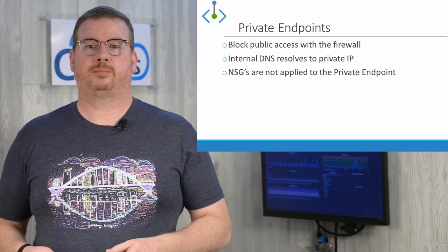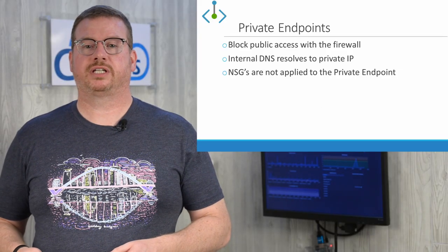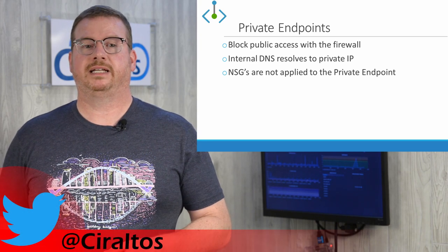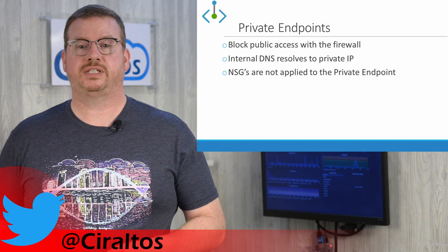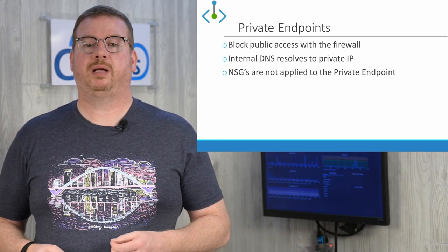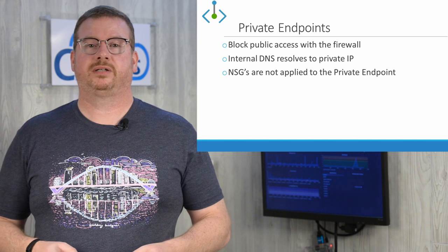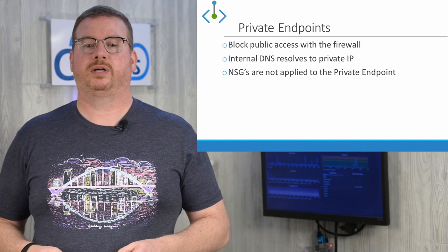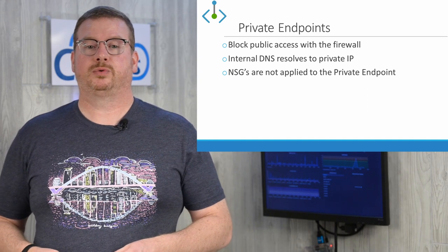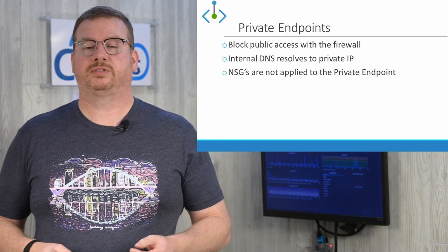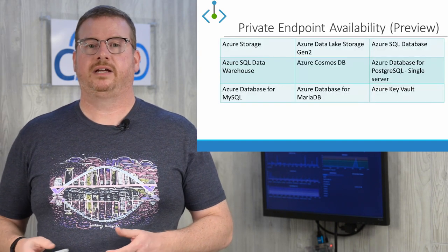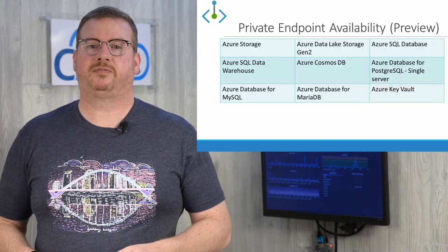Here are some key points on private endpoints. All public access to the storage account can be blocked by the storage firewall. Internal Azure DNS resolves the storage account hostname to the private IP address. External DNS resolves to the public IP, and network security groups are not applied to the network private endpoint's network interface. Outbound network security group rules can be applied to other network resources to block traffic to the private endpoint if needed. Here is a list of services that are available for private endpoints.